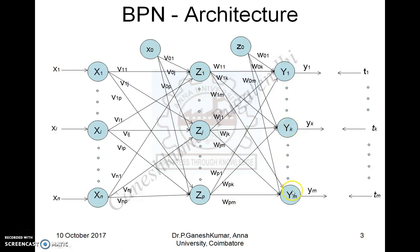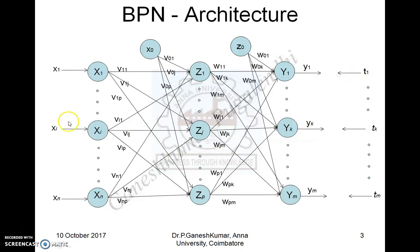The output produced by each output node is y1, yk, and ym. The values t1, tk, and tm are the target outputs taken from the data — that is, the actual output — while y1, yk, and ym are the outputs produced by the network. That is all about the basic three-layer architecture. There is also a bias: one bias connects the input layer to the hidden layer, and another connects the hidden layer to the output layer. These bias nodes also connect to every other node in the respective next layer.